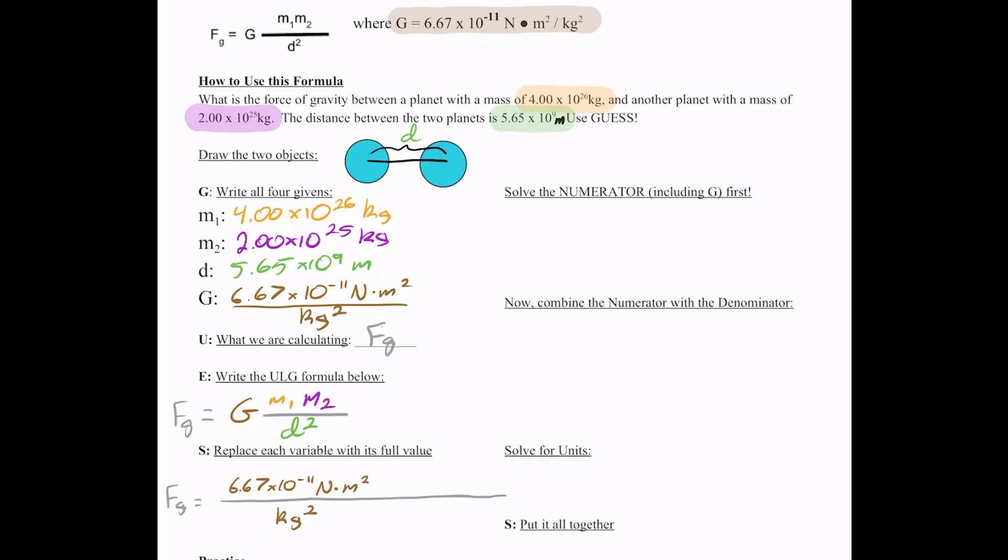Then my masses: 4.00 times 10 to the 26th kilograms, 2.00 times 10 to the 25th kilograms. And that is going to be over your distance squared. So I'm going to write it as two separate numbers multiplied by itself. So 5.65 times 10 to the 9th meters times 5.65 times 10 to the 9th meters.